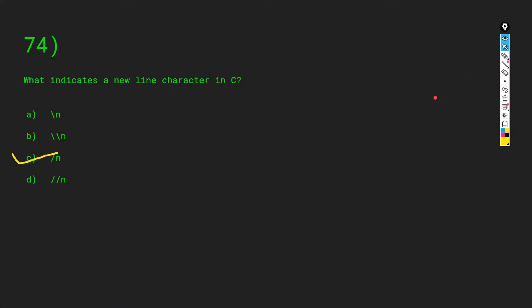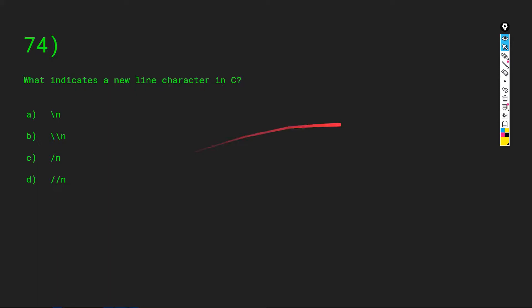Which indicates a new line character in C? Options are backslash n, double backslash n, forward slash n, and double forward slash n. When we want to print something on a new line in C, we always use backslash n.